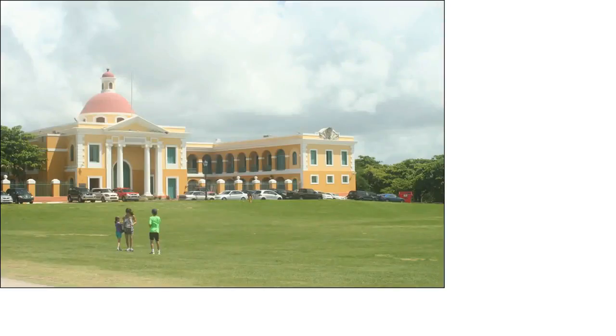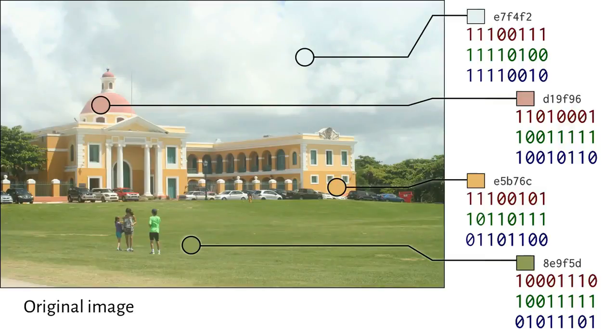Here's a photo I took in Puerto Rico. Let's highlight four pixels in this image and examine the bits used to represent them. The lowest order bits in each channel, that is, each red, green, or blue component, contribute very little to the color we perceive.